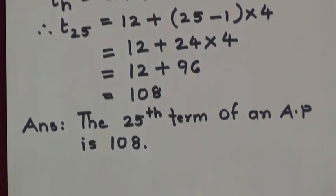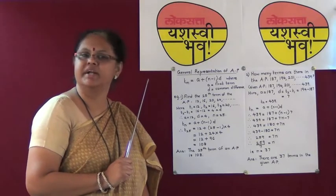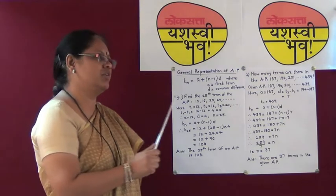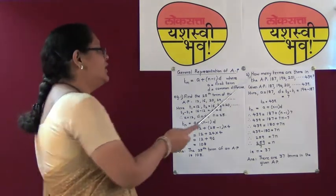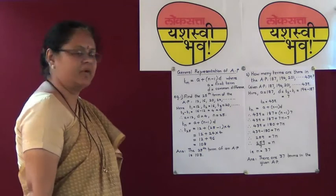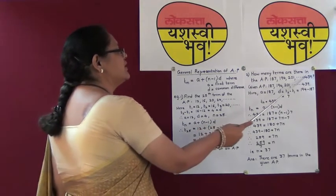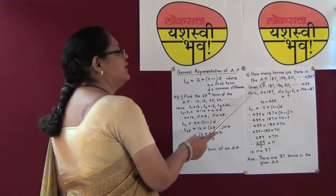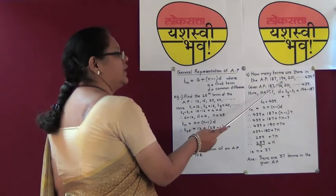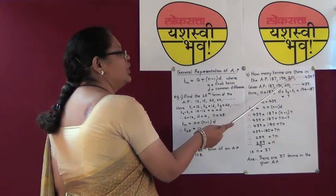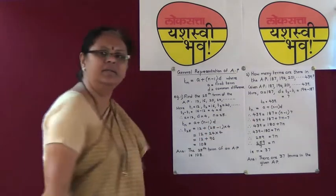For more queries, kindly refer to www.hsakhtar.com or send your queries by email to the following address. Let us go further to the second sum: how many terms are there in the arithmetic progression 187, 194, 201, so on to 439?